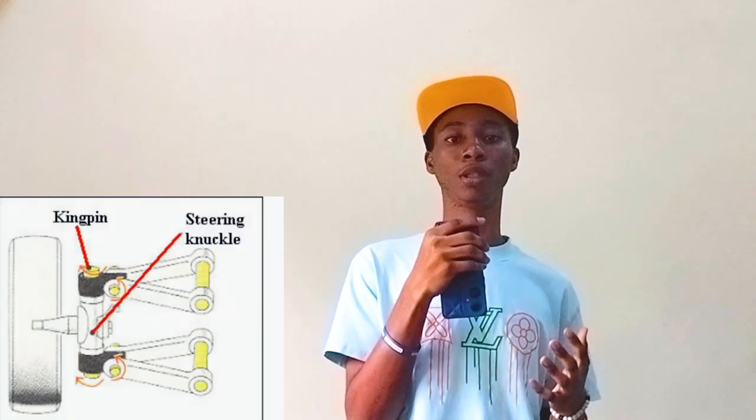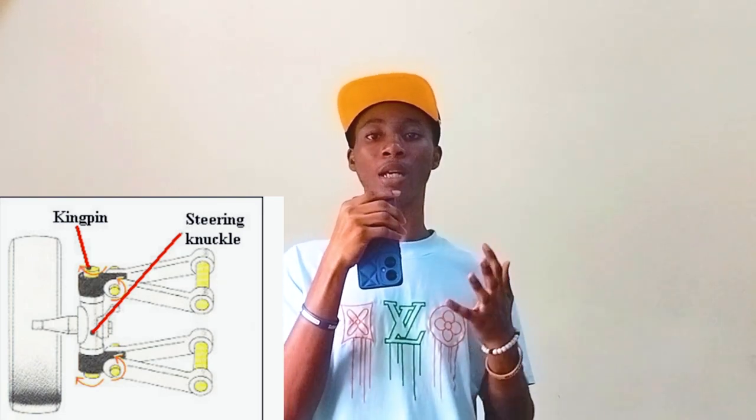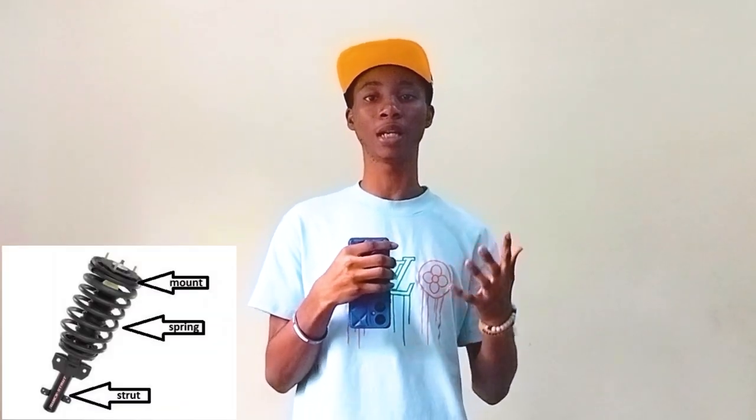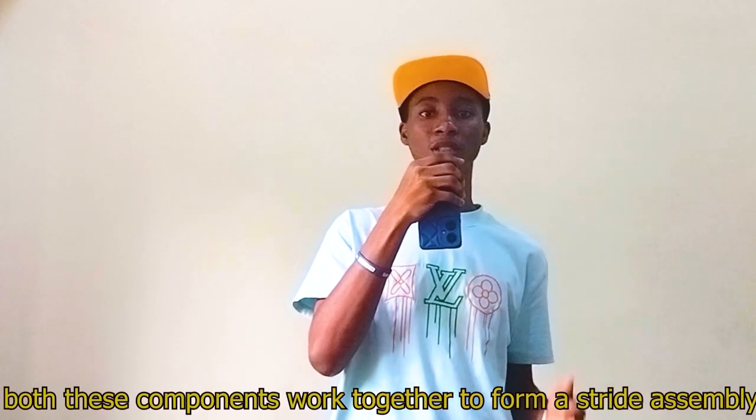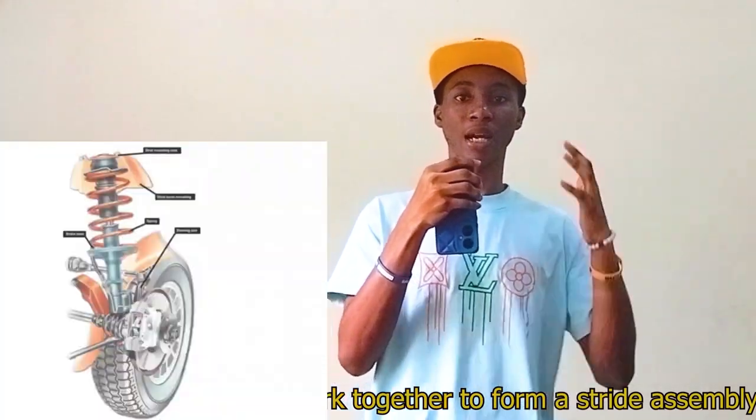The knuckle is also connected to the lower arm using a ball joint. It has a caster angle and a kingpin on the front wheel which helps in steering the vehicle left or right. Strut is the main component of a suspension system. It is basically the combination of spring and dampers, having two ends attached to the frame and the wheel. The spring converts kinetic energy into potential energy, and the damper dissipates the kinetic energy into heat energy. Both components work together to form a strut assembly.